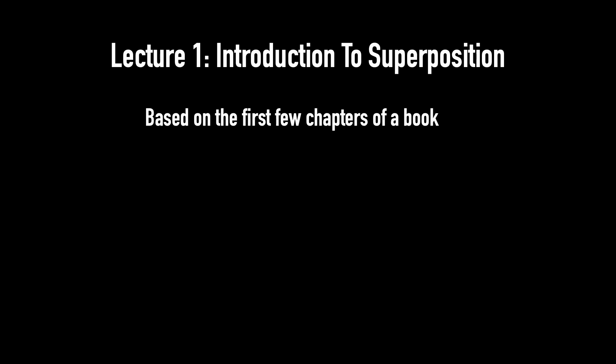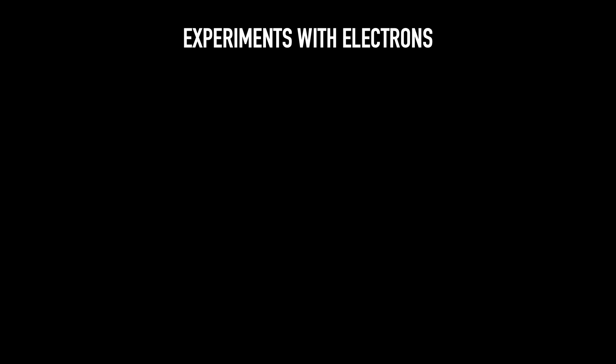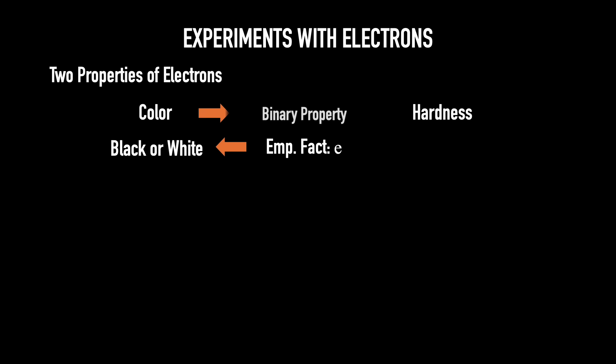The logic of this lecture is based on a discussion in the first few chapters of a book by David Albert called Quantum Mechanics and Experience. Today I want to describe a set of experiments with electrons. To my mind they are the most unsettling experiments ever done. They've been performed and the results, exactly as I'll describe them, are true. I'll focus on two properties of electrons, which I'll call color and hardness. The empirical fact is that every electron that's ever been observed is either black or white and no other color.